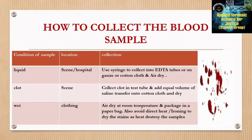How to collect blood samples: First, for liquid blood at a hospital or scene, use a syringe to collect into EDTA tubes, or onto gauze or cotton cloth and air dry. Second, for blood on clothing at the scene, collect the cloth in a test tube, add equal volume of saline, transfer onto cotton cloth, and dry. Third, for wet blood on clothing, air dry at room temperature and package in a paper bag, avoiding direct heat and ironing as heat destroys the sample.